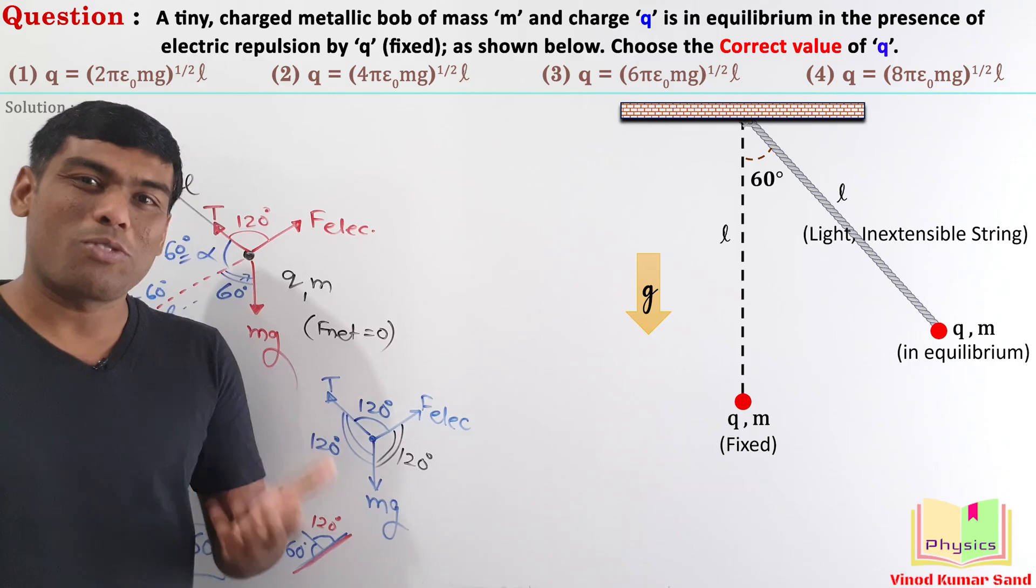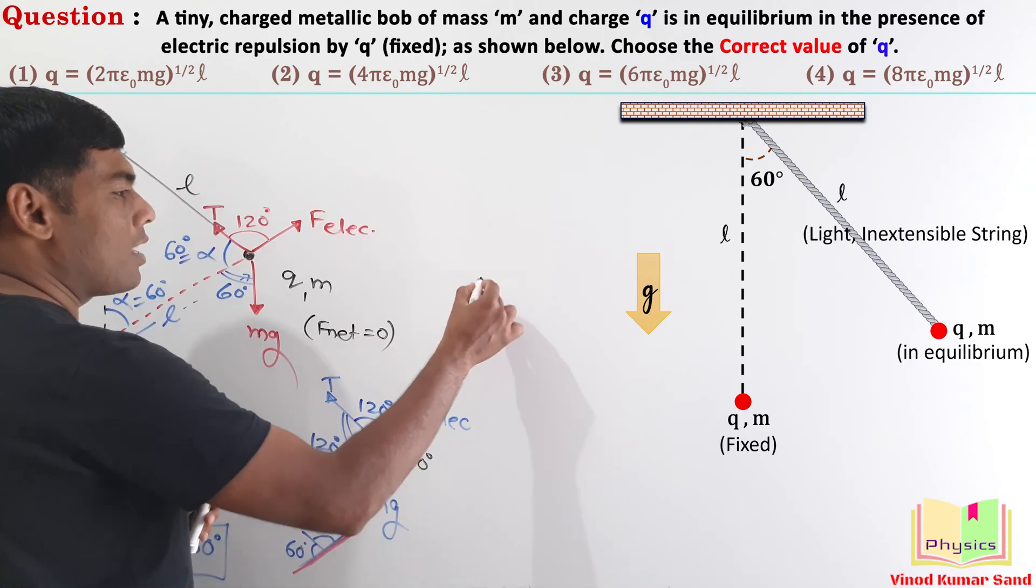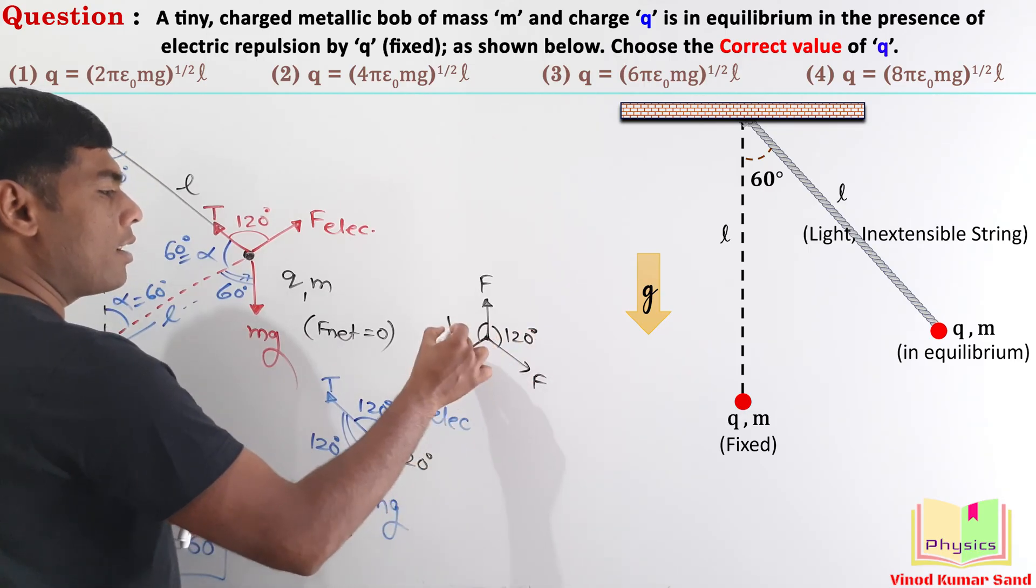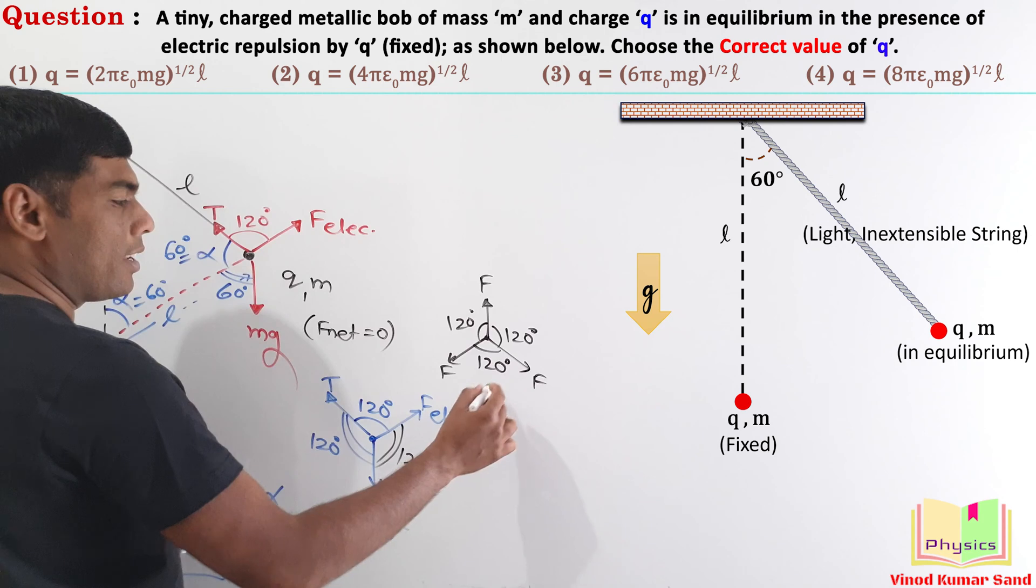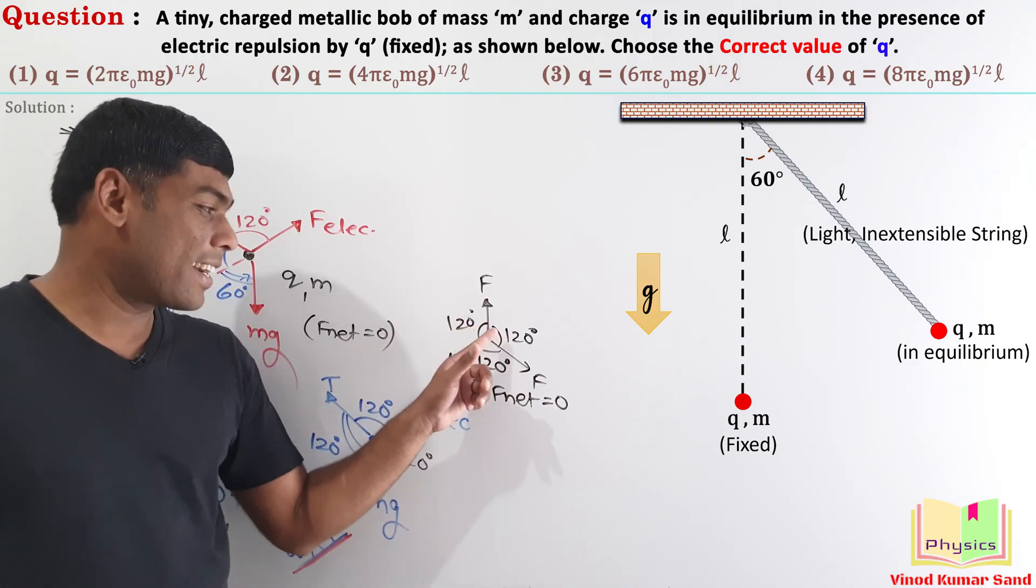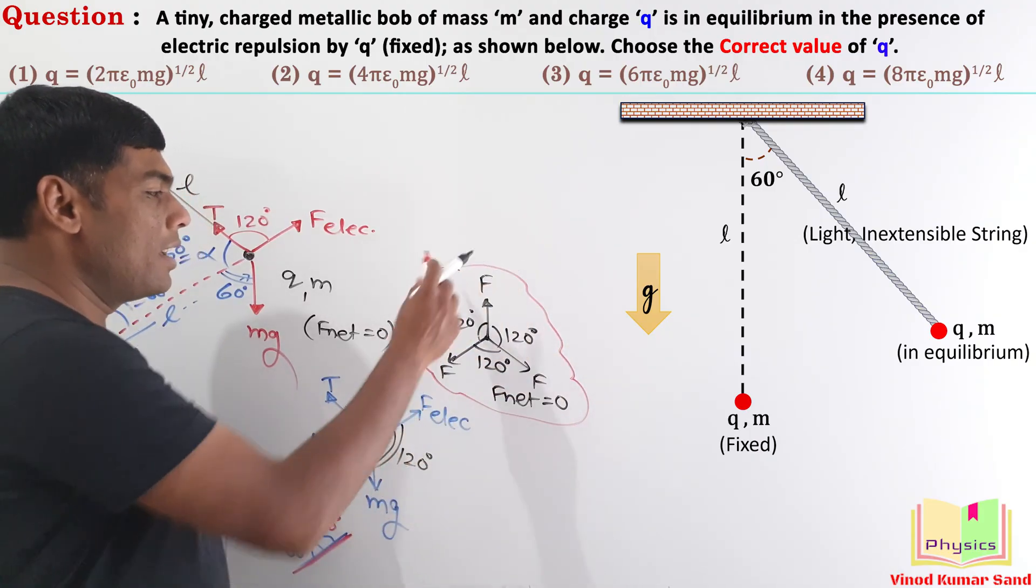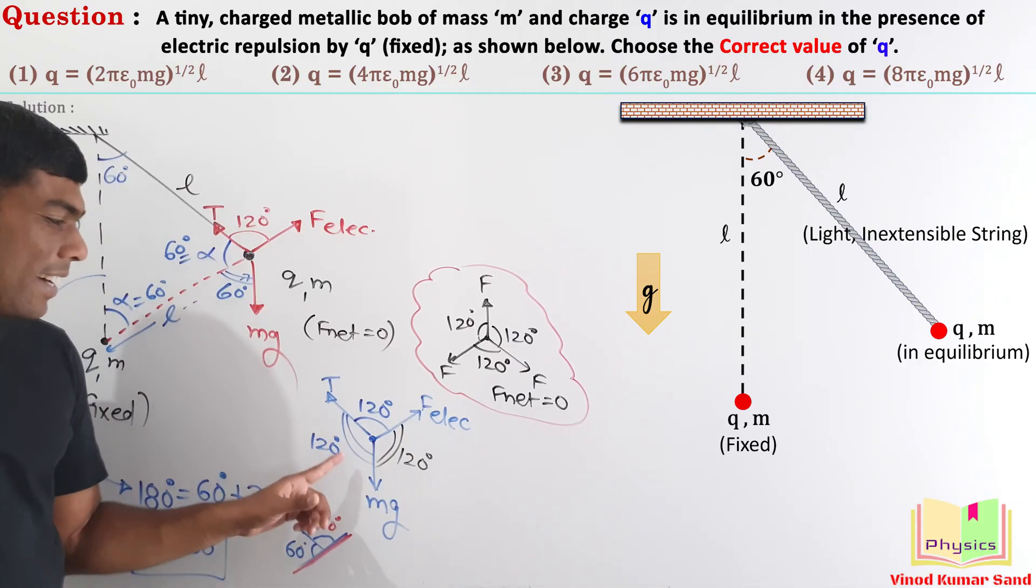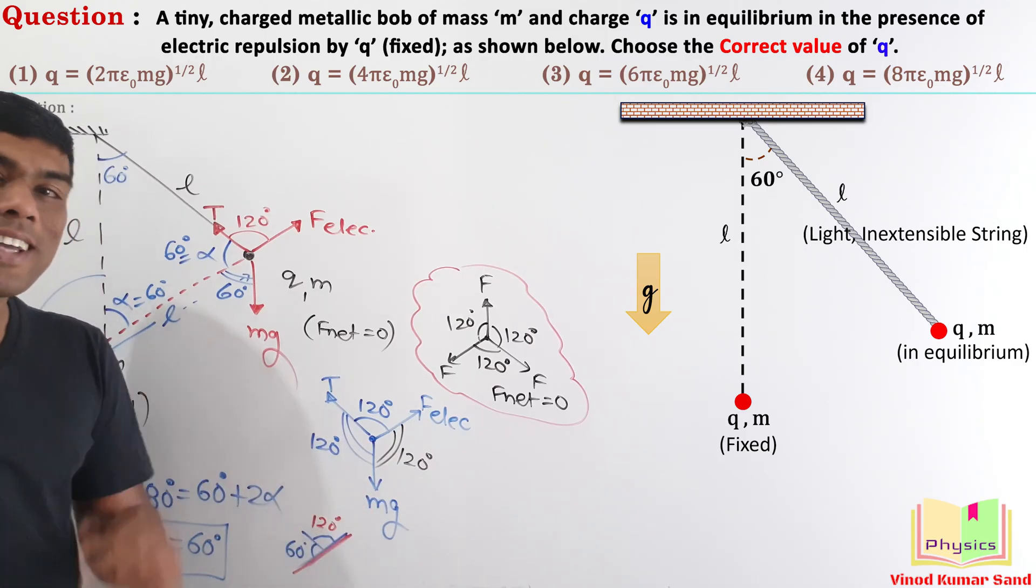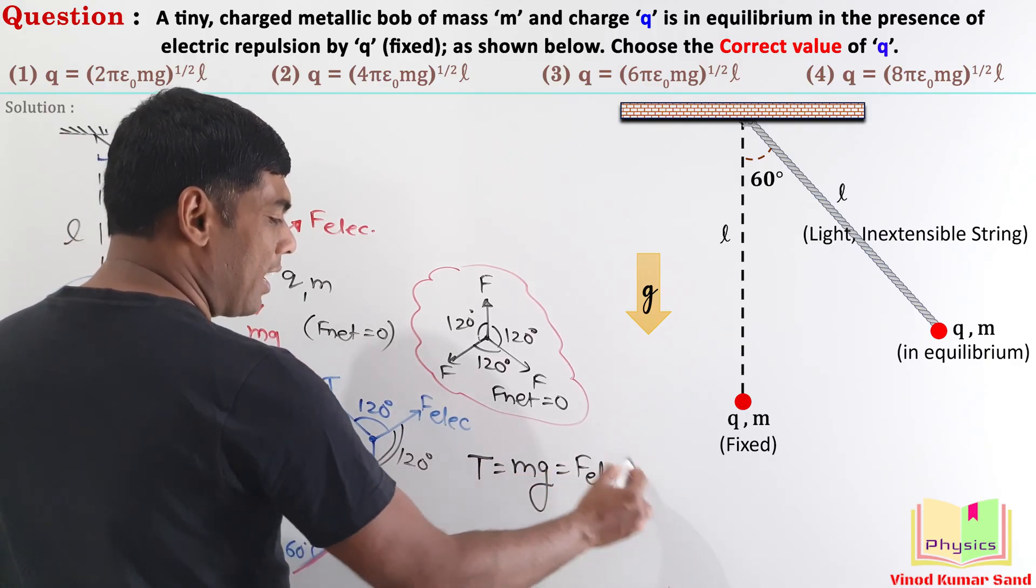Here comes an interesting analogy from the vector. If the net force is 0 and 3 forces are acting at a point like this, having the same magnitude, then the angle between the neighboring forces is 120 degree. I hope you remember that analogy. At a point, if 3 forces of same magnitude are acting, that angle between neighboring forces is 120 degree, then the net force is 0. Using this analogy, we can directly say that the tension, electric force and the Mg, they must have the equal magnitude. So, T is equal to Mg and this should be equal to the electric force.